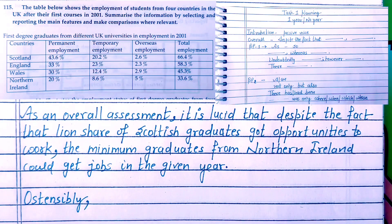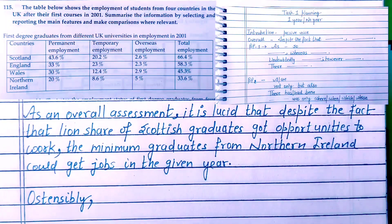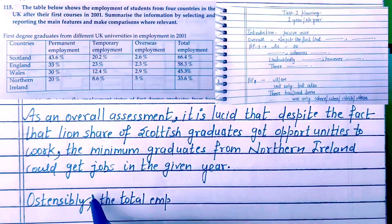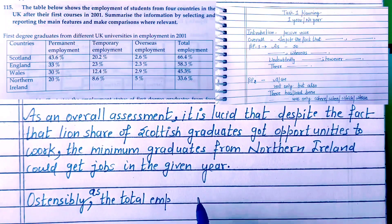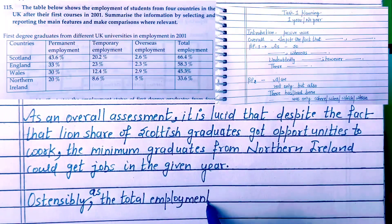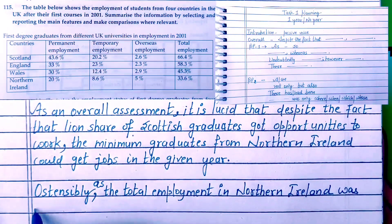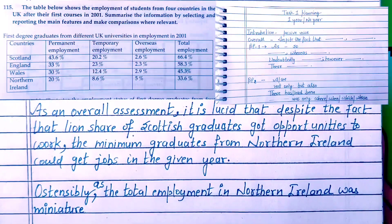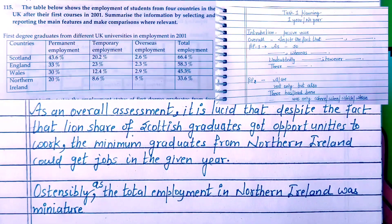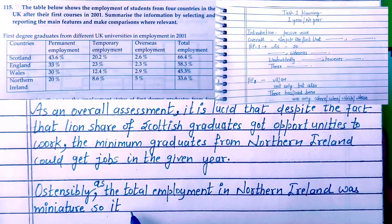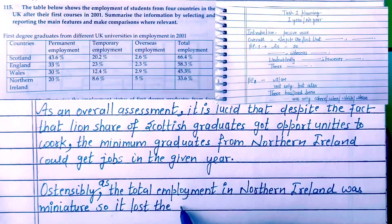Now comes body paragraph 1. My sentence structure will be 'as and so'. My sentence structure will be: 'Ostensibly' or 'clearly', as the total employment in Northern Ireland was miniature — meaning total employment was the least in Northern Ireland — it lost the race with merely 33.6%.